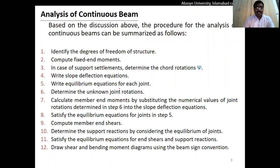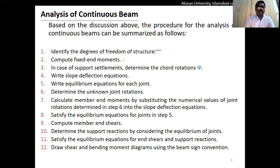We also studied the 12 basic steps for analyzing continuous beams. First, identify the degree of freedom — the number of unknown joint rotations in the structure. Then compute the fixed end moments using fixed end moment tables. If there is a settlement, find the value of psi; if there is no settlement, its value is taken as zero. Then write the slope and deflection equations.